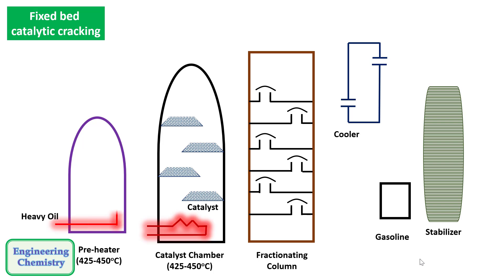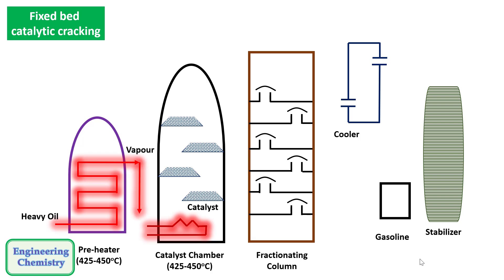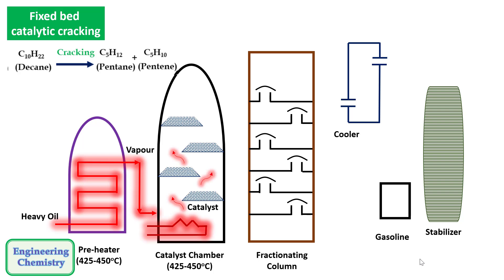First, the heavy oil is charged into a preheater where it is heated to 425 to 450°C. Here almost all the heavy oil gets converted into the vapor phase. These vapors are then sent to a catalyst chamber where the process of cracking occurs — for example, decane gets converted into pentane and pentene. The cracked vapors then pass into a fractionating column where different fractions of gasoline are collected in different layers.